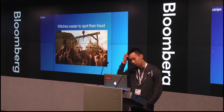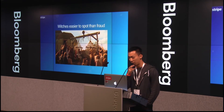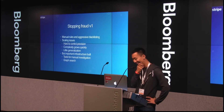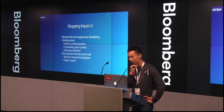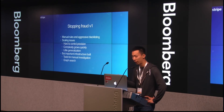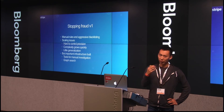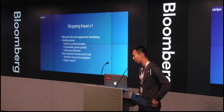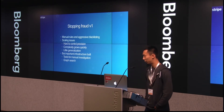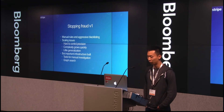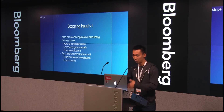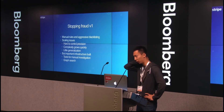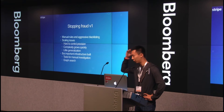The first thing we realized is that it's easier to detect witches than fraud — that's a scene from the Monty Python skit. The first version of our fraud system involved a lot of manual rules and aggressive blacklisting. Right when Stripe launched, we discovered a bunch of strange-looking transactions and built a system for stopping fraud. That worked for quite a while until our volumes started to grow exponentially.